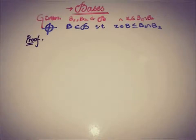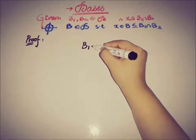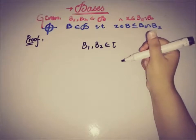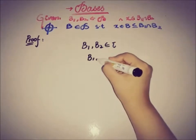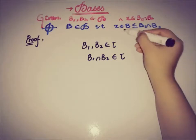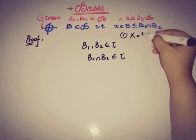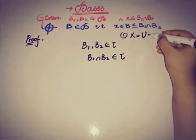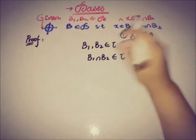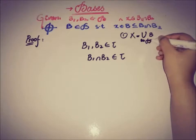Let's prove this. It is given that b1 and b2 are members of the basis B. Using the first condition — that X equals the union of all elements of B — we can say that b1 and b2 are elements of tau for any topology tau. By definition of the topology, b1 ∩ b2 must also be in tau, by the finite intersection property. We have used the definition of the topology and the first condition, and since X is also a member of tau, b1 and b2 are also members of tau.